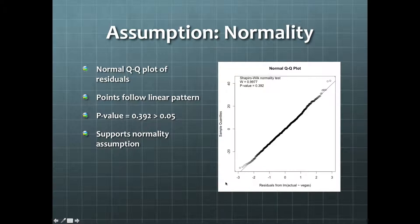This is the normal QQ plot of the residuals. The points follow a linear pattern supporting the normality assumption. In addition, the Shapiro-Wilk test gives a p-value of 0.392. Since this is greater than 0.05, we can't reject the null hypothesis of normality.